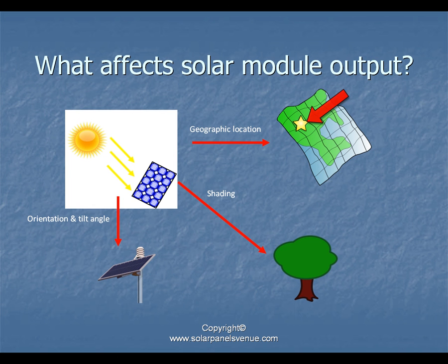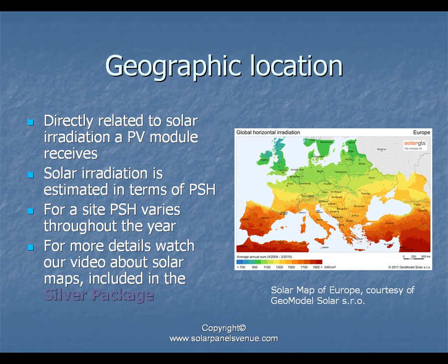An important question is: what affects solar module output? The energy output is affected by three main factors: location, orientation and tilt angle, and shading. Geographic location plays a vital role as it determines the amount of solar radiation, which directly affects generated electricity. Solar radiation is evaluated in peak sun hours (PSH), a value that can be obtained from solar maps and varies throughout the year with each season.